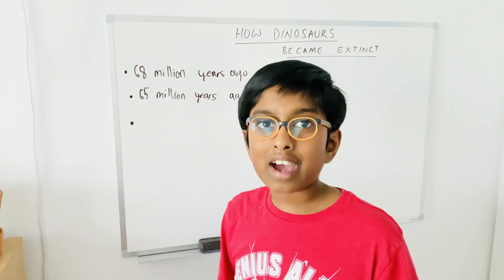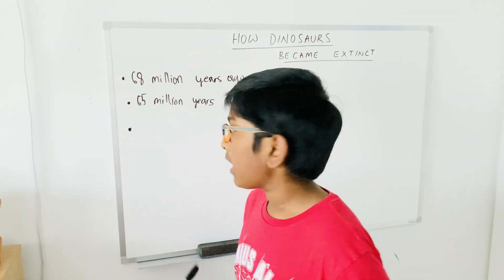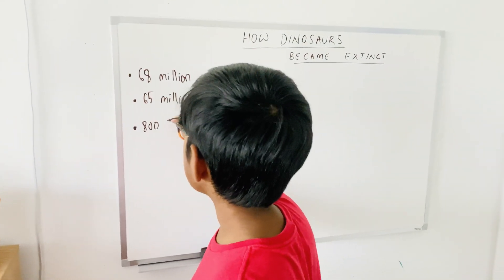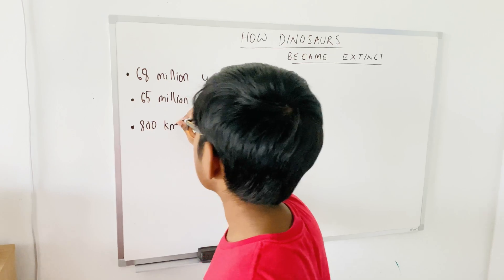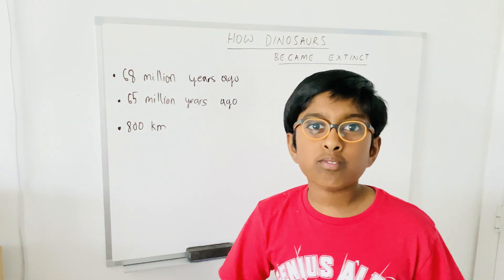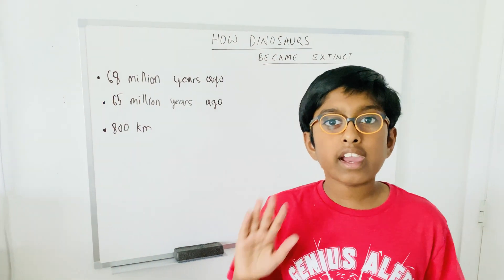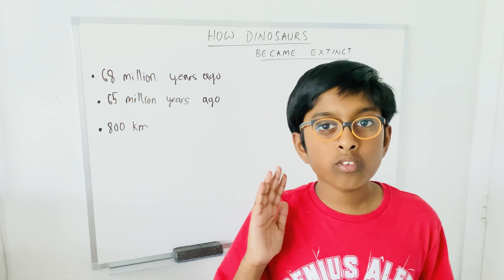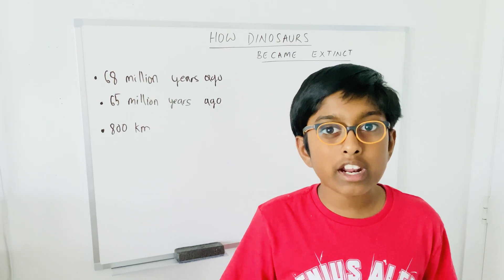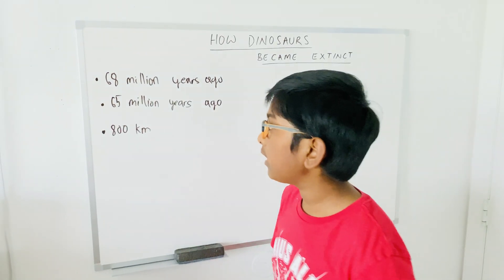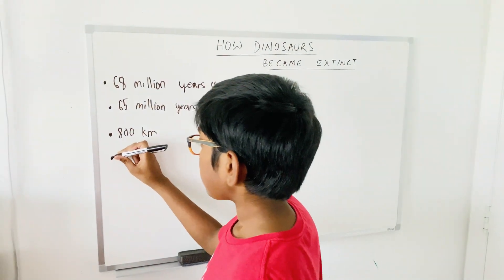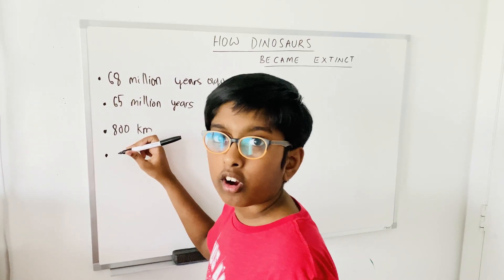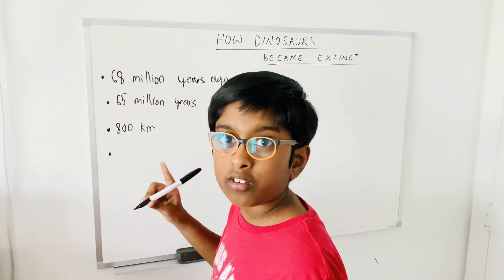When the impact happened, everyone within 800 kilometers died. Dinosaurs within 800 kilometers of the asteroid impact died right away, and Earth's temperature started increasing.